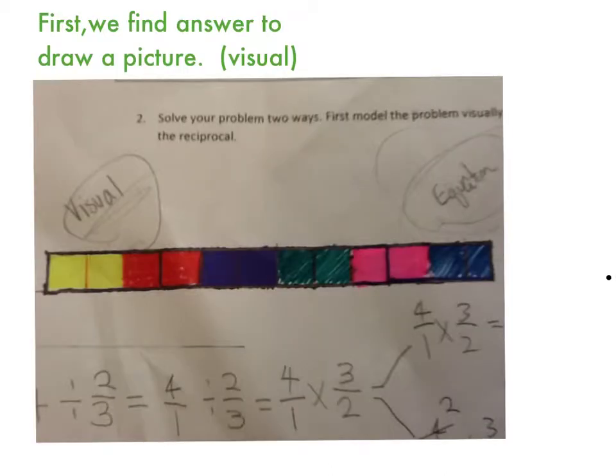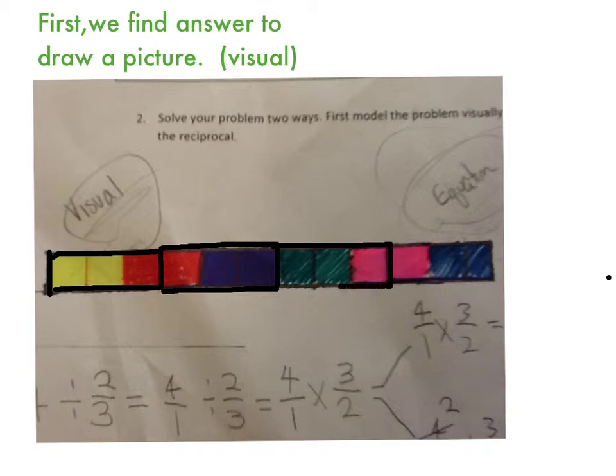First, we find answer to draw a picture. This is one cake, second, third, and fourth cake. And Jaeyoung wants to give 2/3 of cake to each of his friends. So, we have to divide this in 3.